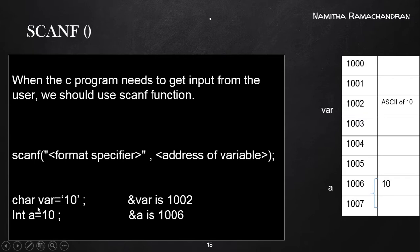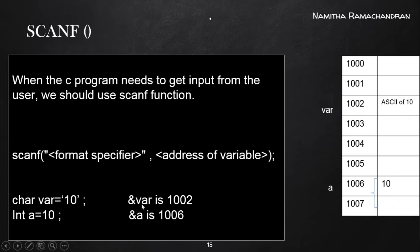So char var = 10 means inside the memory location pointed by the variable var, we store the ASCII value of digit 10. The notation ampersand-var (&var) actually indicates the address information of the location pointed by var. So what is the address pointed by var? Here it is 1002. So &var indicates the address value 1002.